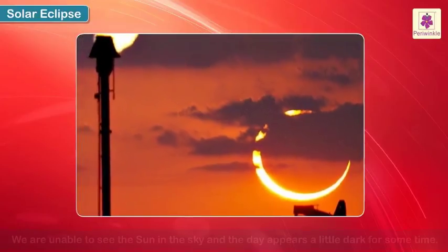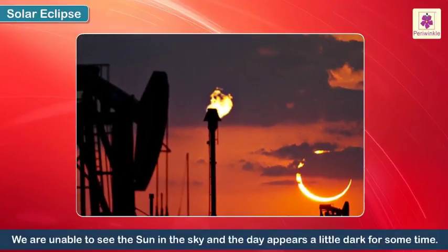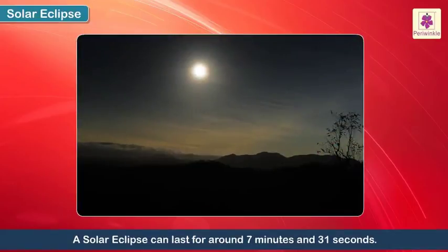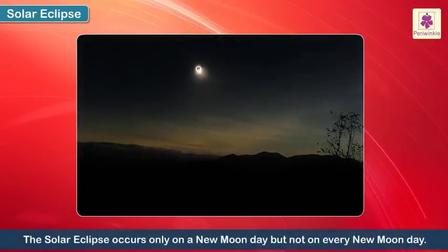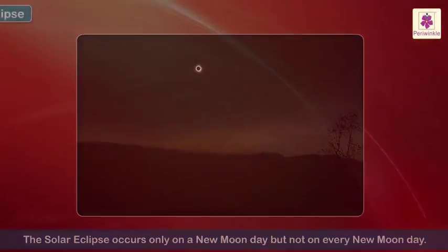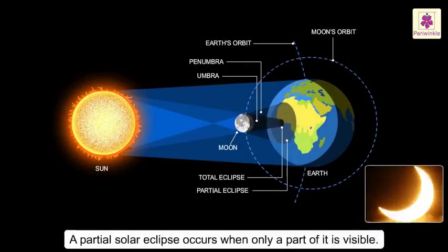During the solar eclipse, we are unable to see the Sun in the sky and the day appears a little dark for some time. A solar eclipse can last for around 7 minutes and 31 seconds. The solar eclipse occurs only on a new moon day, but not on every new moon day. A total solar eclipse occurs when the Sun cannot be seen at all, while a partial solar eclipse occurs when only a part of it is visible.